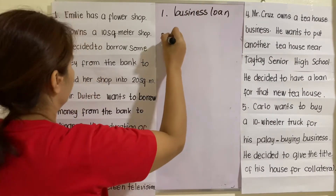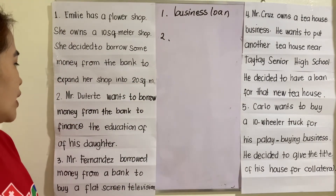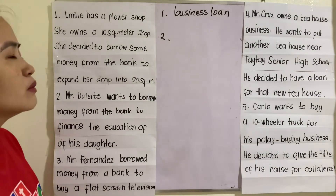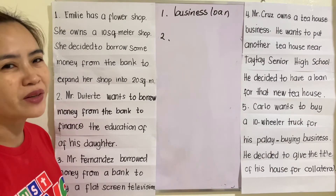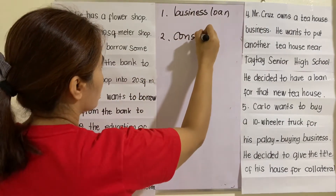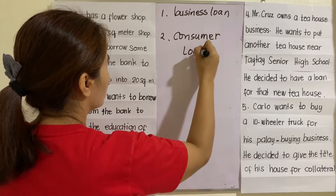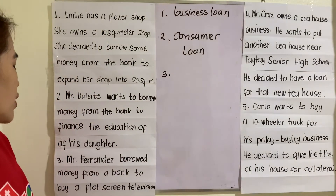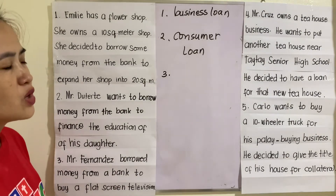Number two: Mr. Duterte wants to borrow money from the bank to finance the education of his daughter. What kind of loan is that — business or consumer? This is for personal use, therefore this is a consumer loan.